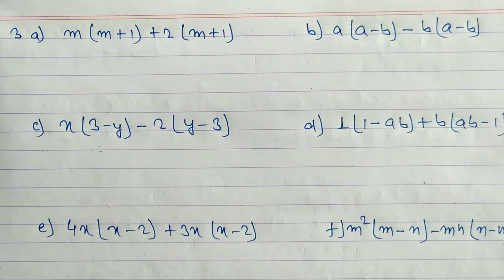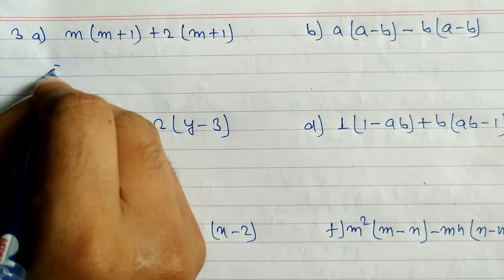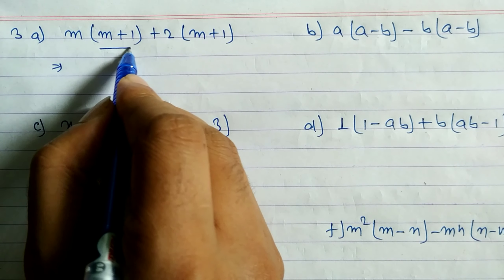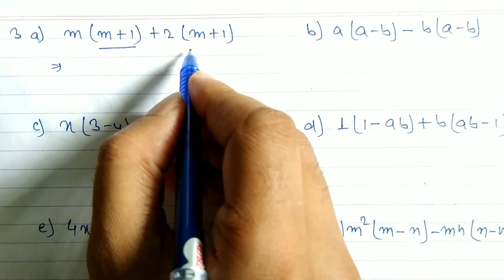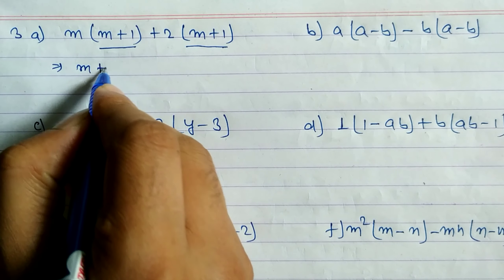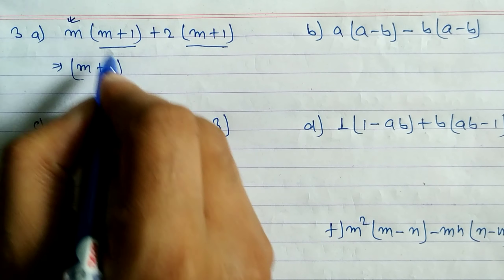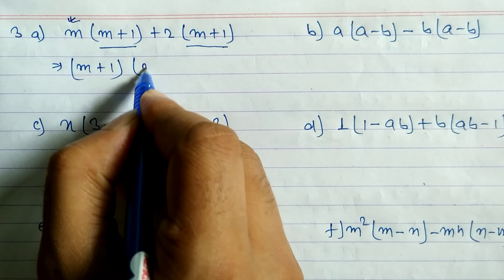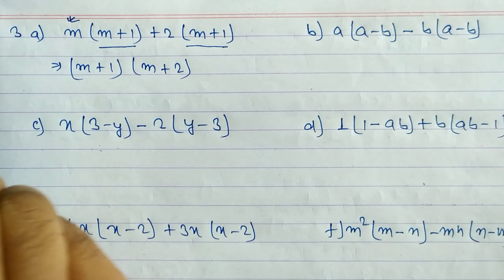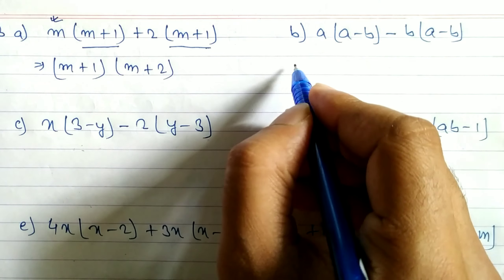In this video we are going to learn factorization. You can see the question here. So here what is common — m plus 1, m plus 1 — so we can take m plus 1 as common, and what is remaining is m. So we have to write m plus 2. Finished.